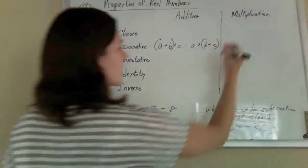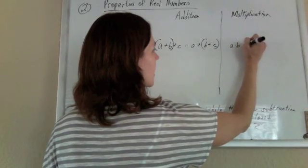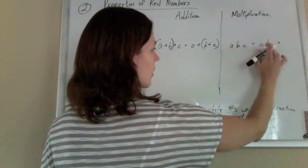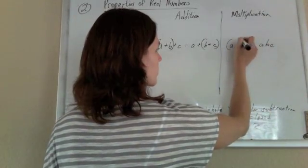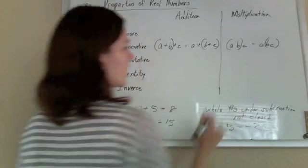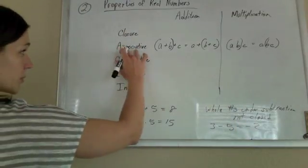Multiplication, same idea. A times B times C. The order is the same, just the grouping symbols change. Here, the B associates with the A. Here, the B associates with the C. So that's your associative property.